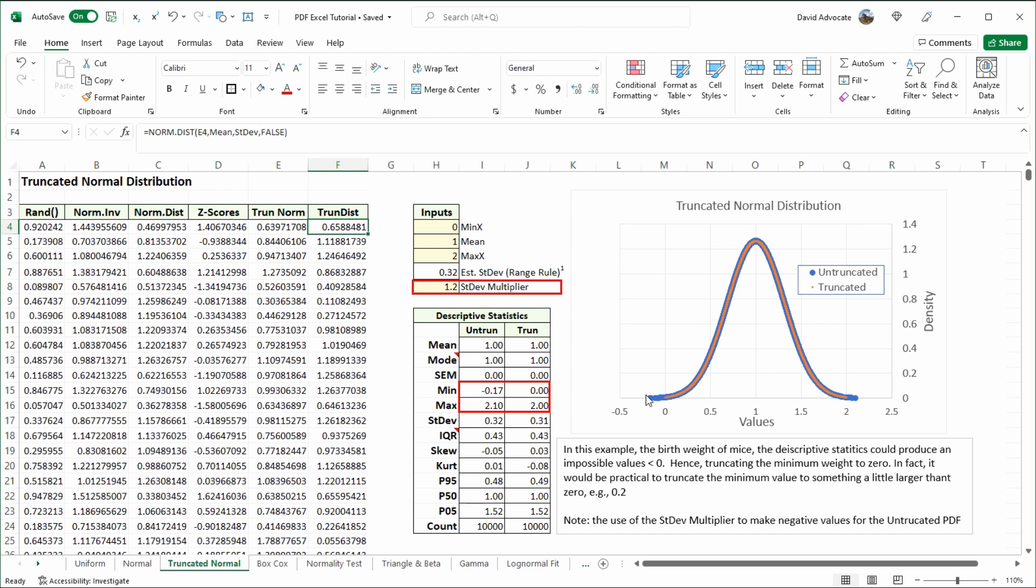And you can see that the blue dots, which represent the untruncated distribution, extends below zero and above two. But the red line represents the truncated, and it stays within the bounds, as also demonstrated here in the descriptive statistics.